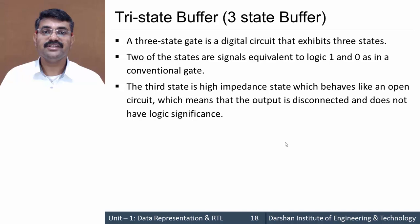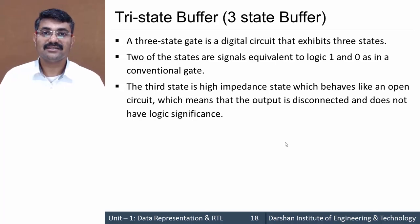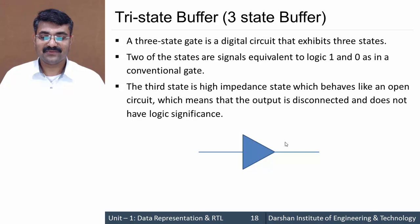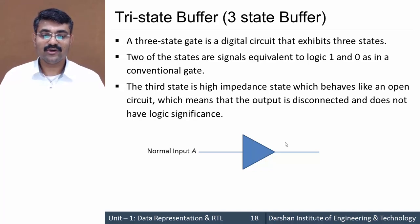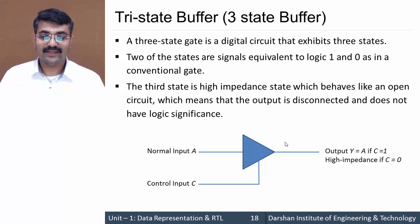The third state is named the high impedance state, which makes the buffer gate work as an open circuit. In an open state circuit, there won't be any kind of logic. The control state controls the buffer. In a normal buffer we have two states — input and output — but here we are adding one more input: the control input, which is C, also termed as the high impedance state, and we get output Y.